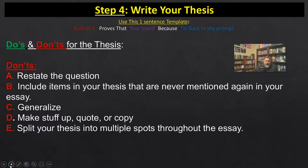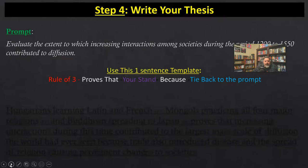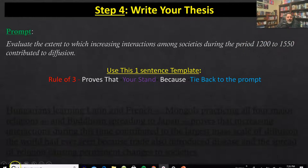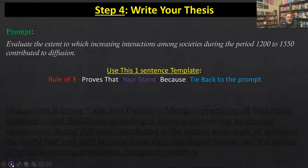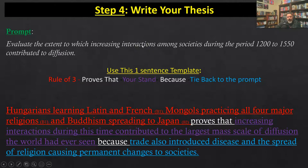They can't take points off — it's not English class. If they gave you the point on the first thesis, they'll ignore the second one. Some College Board members have said that's a smart move — if they didn't understand your first thesis and you got a second one, that's great insurance. So using my template — rule of three: Hungarians learning Latin and French, Mongols practicing all four major religions, and Buddhism spreading to Japan — proves that increasing interactions contributed to the largest mass-scale diffusion the world had ever seen.